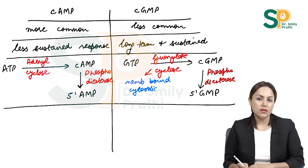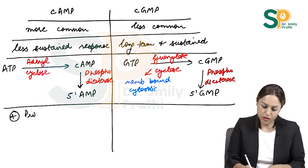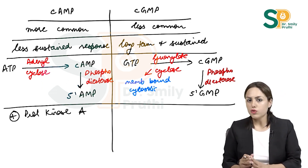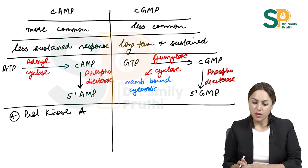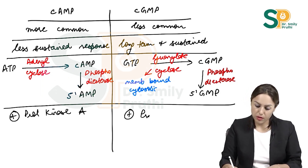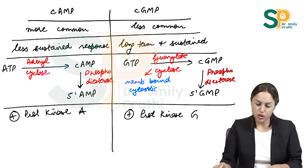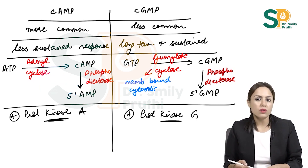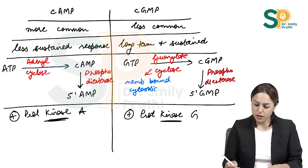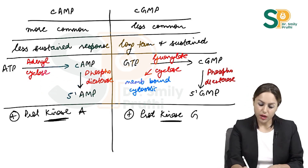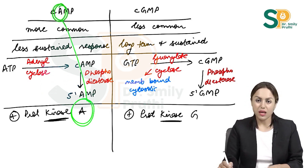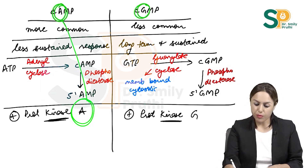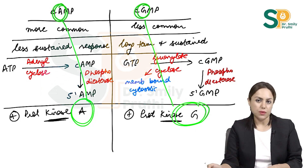Cyclic AMP activates protein kinase A, and this kinase causes phosphorylation of various events. On the other hand, cyclic GMP activates protein kinase G, which also causes phosphorylation but of different events. Both are kinases, so they cause phosphorylation — cyclic AMP activates protein kinase A, and cyclic GMP activates protein kinase G.